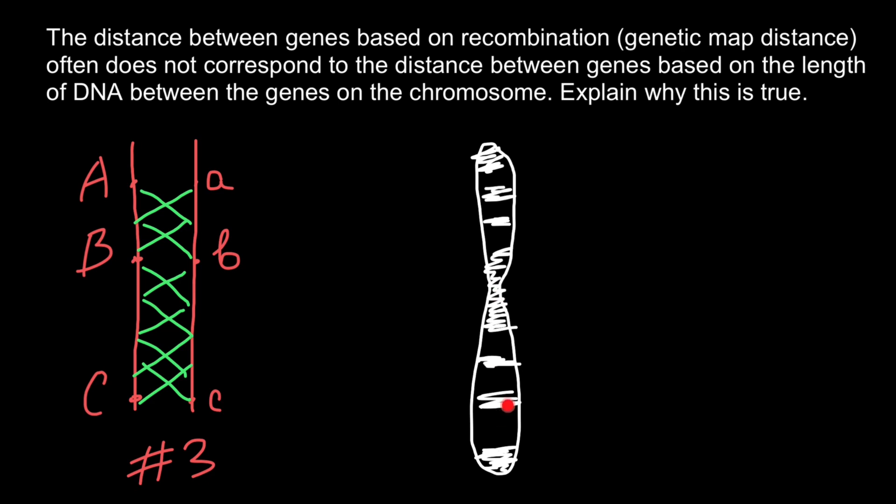These actively expressed regions would go in between regions where genes are not going to be expressed. So euchromatin regions and heterochromatin regions. First of all, genes are not evenly spread on the chromosome.